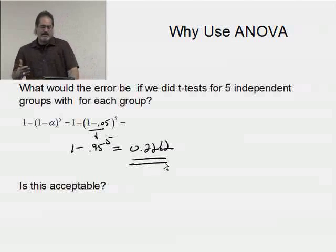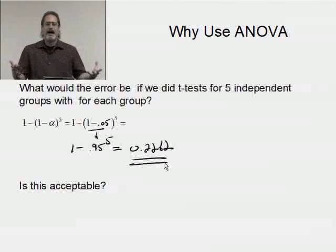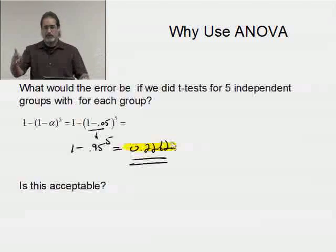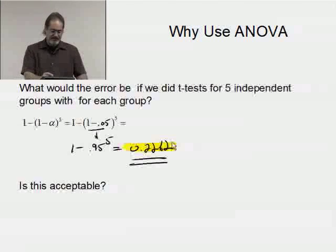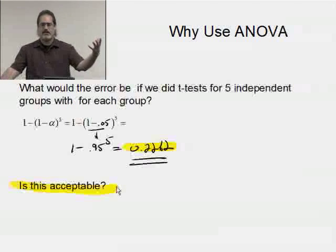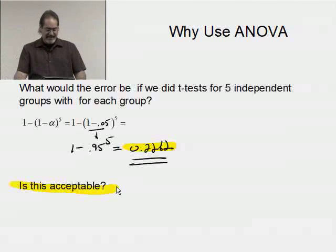What this is actually saying is that if I do five t-tests, or five hypothesis tests, each using an alpha level of 0.05, which is typically pretty reasonable, my actual combined alpha, the probability that I commit a type one error, is actually going to be more than 22%. I went from a maximum reasonable risk of 5% to 22%. Is this acceptable? No, that's not acceptable.